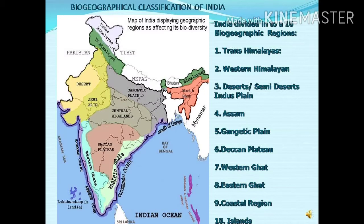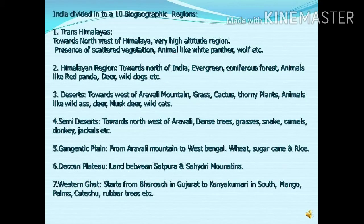Below the Western Himalaya, there are deserts and semi-deserts in the plains. Towards the east and northeast, there is Assam. Next to Assam, there is the Gangetic Plain. Next to the Gangetic Plain, there is the Deccan Plateau. Towards the west, along the coastal side, there is the Western Ghats. Along the east coastal side, there is the Eastern Ghats. Both towards east and west, coastal regions are there. And in the seas, there are islands — land covered on all sides by water.